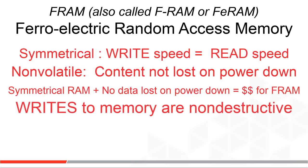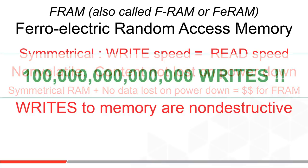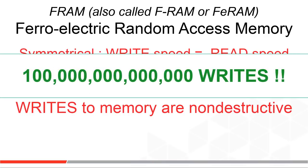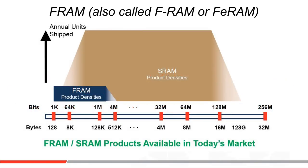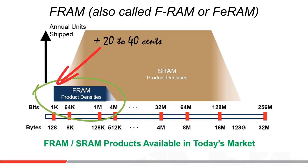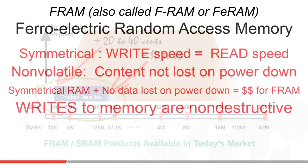Writing to an FRAM doesn't damage the memory cell — write it as many times as you want. 100 trillion writes is a general spec number. Today, FRAM memory ICs come only in the lowest densities, 1 kbit up to 4 megabits. At 1 kbit they cost about 20 cents more than an SRAM, and at 1 megabit that difference could be as much as a couple of extra dollars.